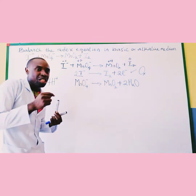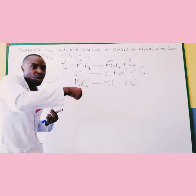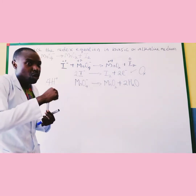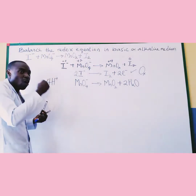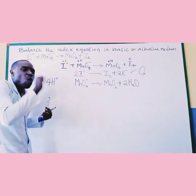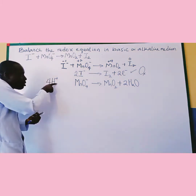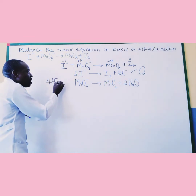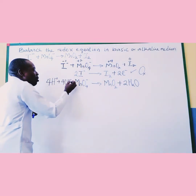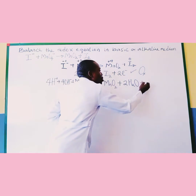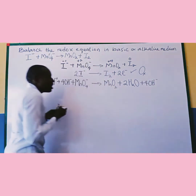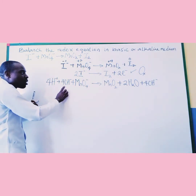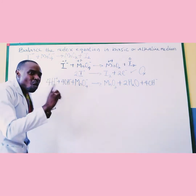That's the difference between the acidic medium balancing of redox and the basic medium balancing. In the case of basic medium, I have to add an equal number of hydroxide ions as there are hydrogen ions, to both sides. So if I have 4 hydrogen ions here, I will add 4 hydroxide ions to both sides.